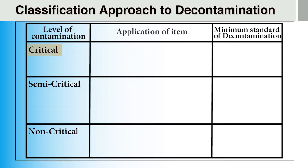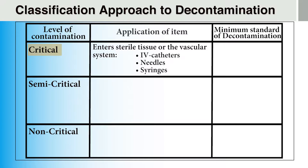A critical level of contamination includes objects that come into contact with the patient's skin or enter the vascular system. Examples would be IV catheters, needles, and syringes. Objects that are critically contaminated must be sterilized unless they are of single use. If they are designed for single use, they should be properly deposited in the red biohazard bags and sharps containers.